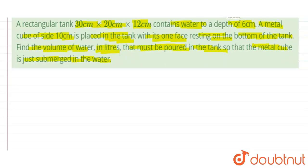First of all, we will find the volume of the water in tank. Volume of water in tank will be equals to 30 multiplied by 20 multiplied by 6. So, this is equals to 3600 centimeter cube.